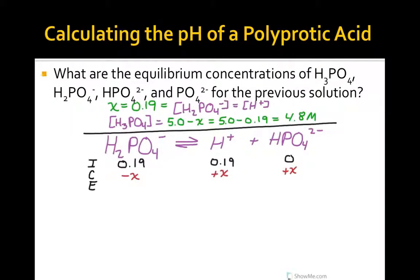An ICE table organizes our initial concentrations, change in concentrations, and equilibrium concentrations. Notice that the initial H-plus concentration is significant now because of the first dissociation.